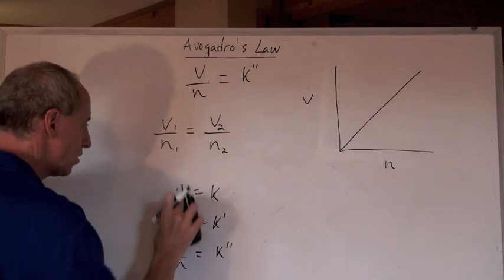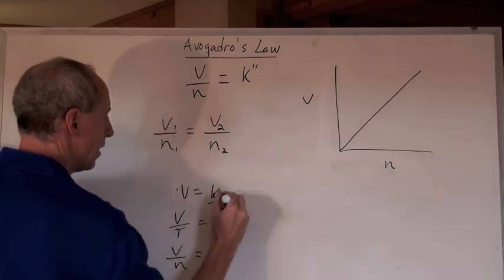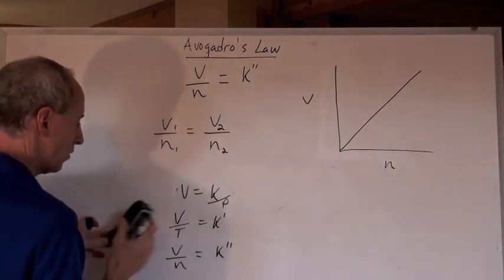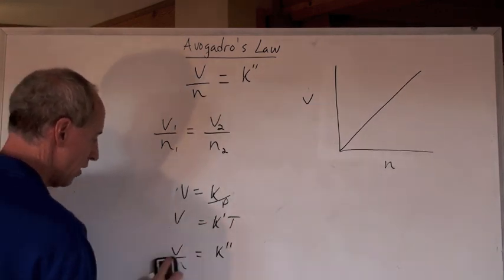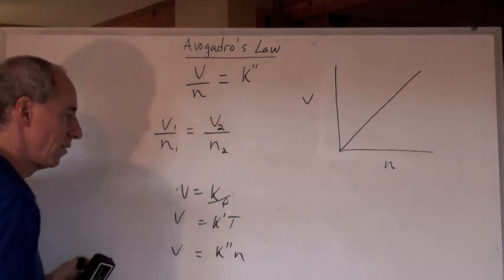Or, if I want to just solve for V, that equals K over P. And if I want to solve for just V here, that's KT. And if I wanted to solve just for V here, I'd multiply both sides by n, and I'd get this.